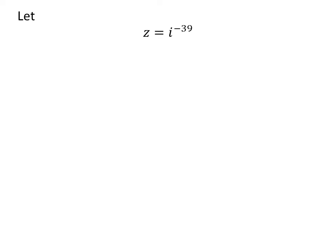Let us assume z be equal to i raised to the power of minus 39. The above statement can be expressed as z is equal to 1 upon i raised to the power of 39. Again, we can express the above statement as z is equal to 1 upon i raised to the power of 38 times i.